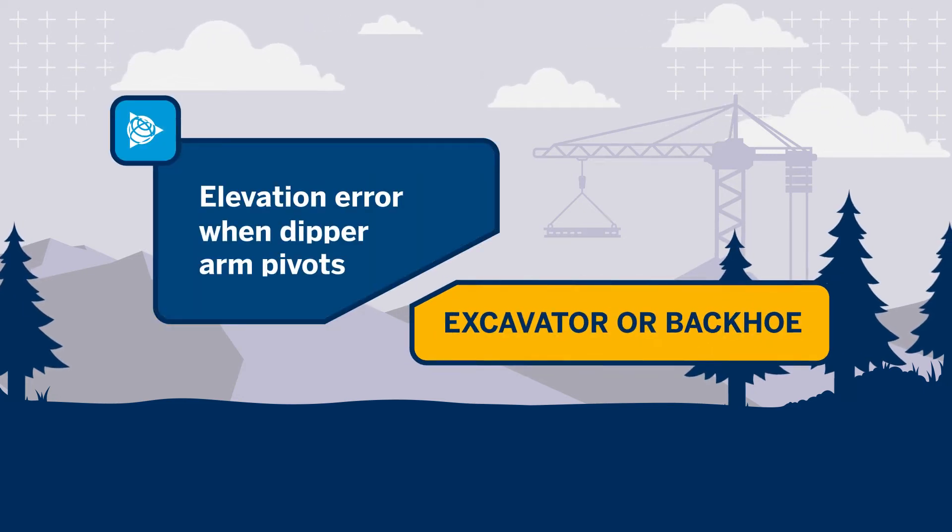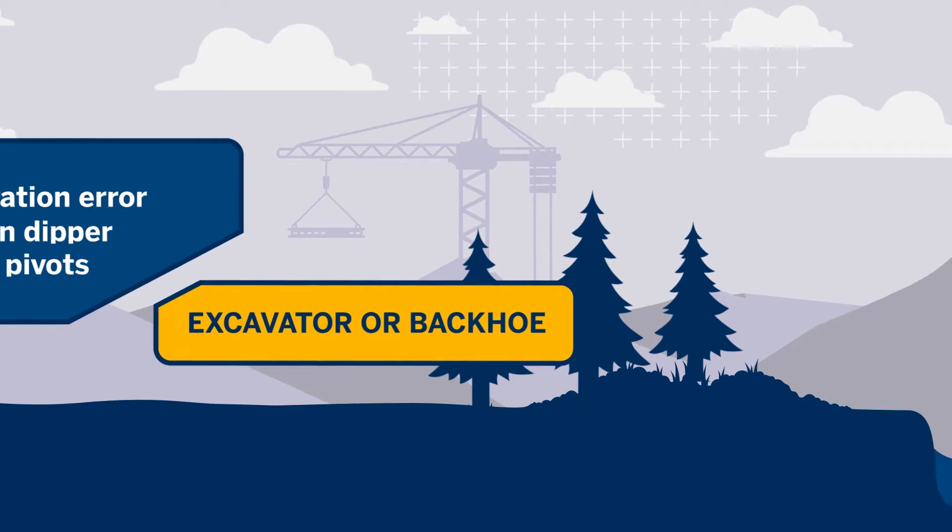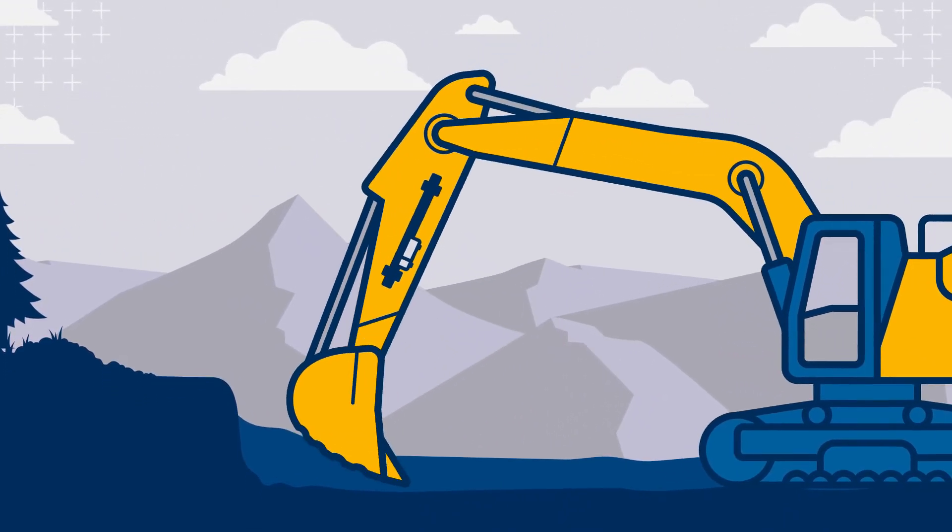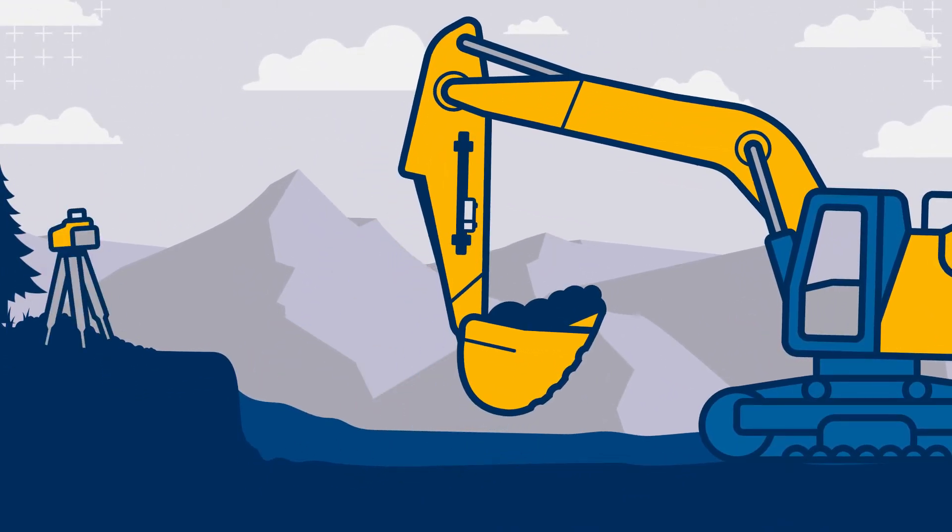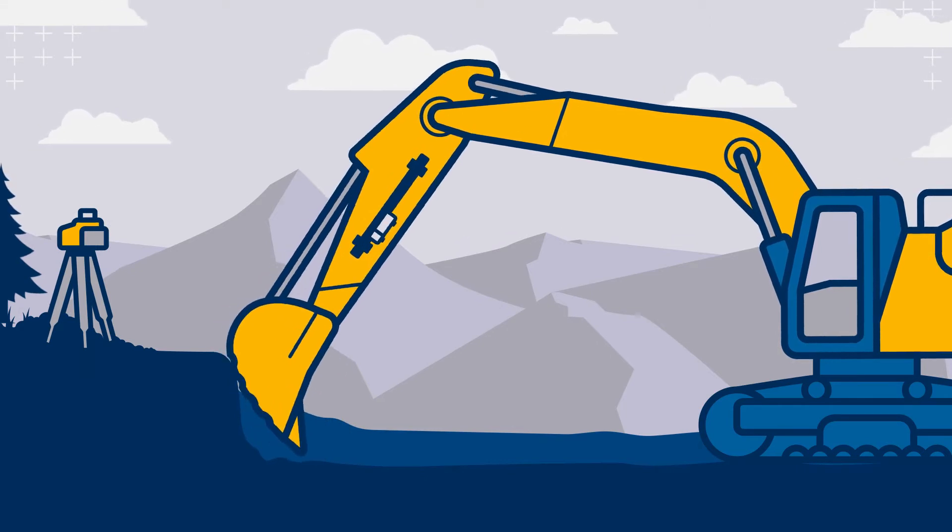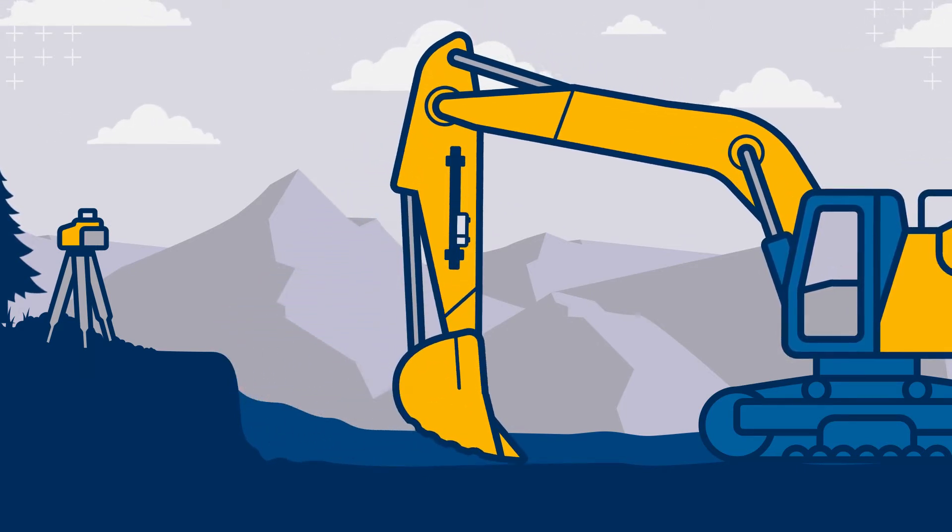Plumb Indicator. When excavating, always have the plumb indication on to ensure accurate readings as an error is introduced when the dipper arm is not plumb.